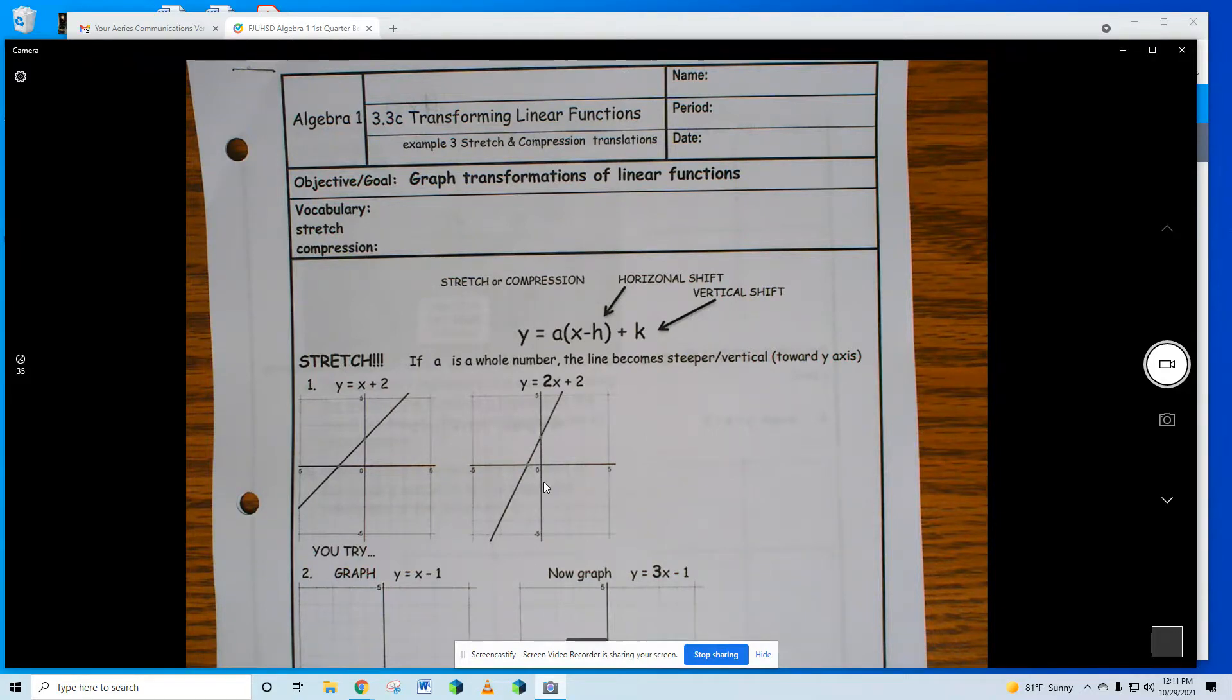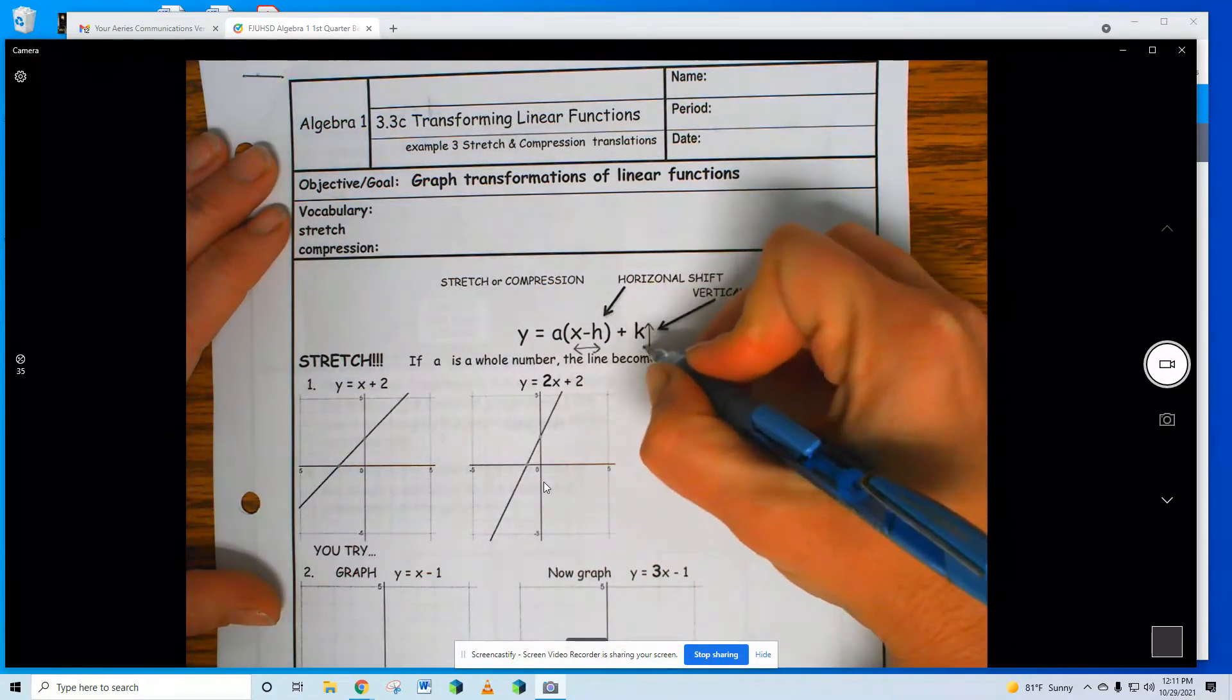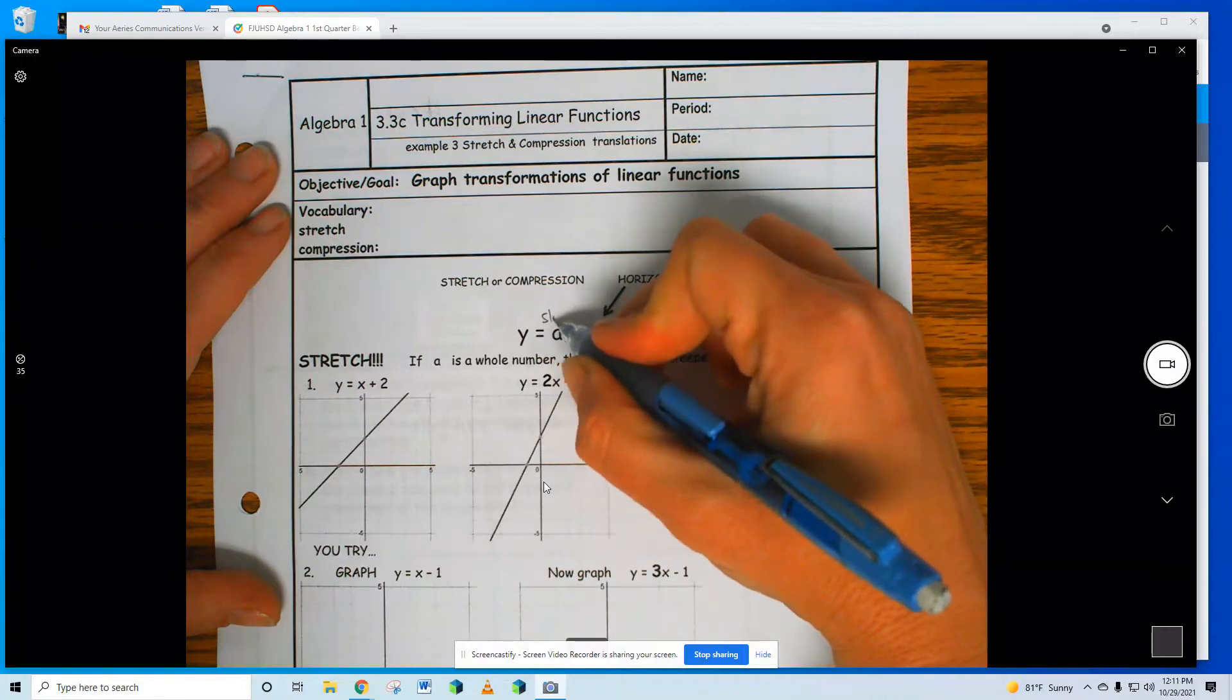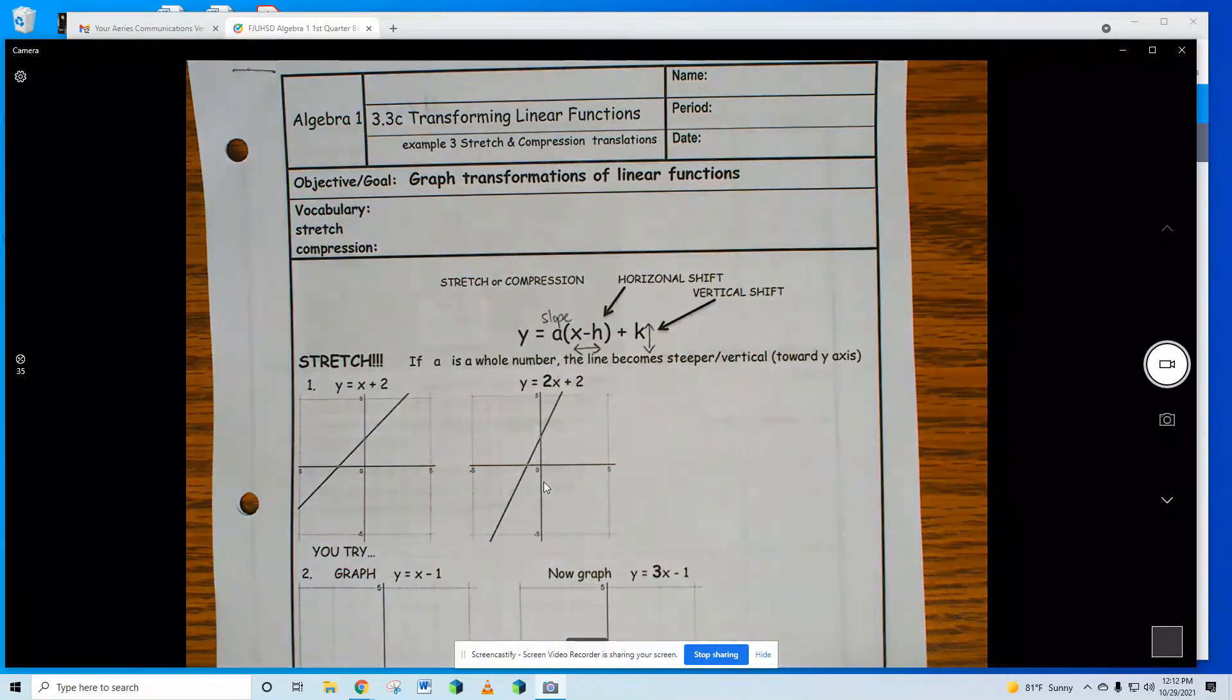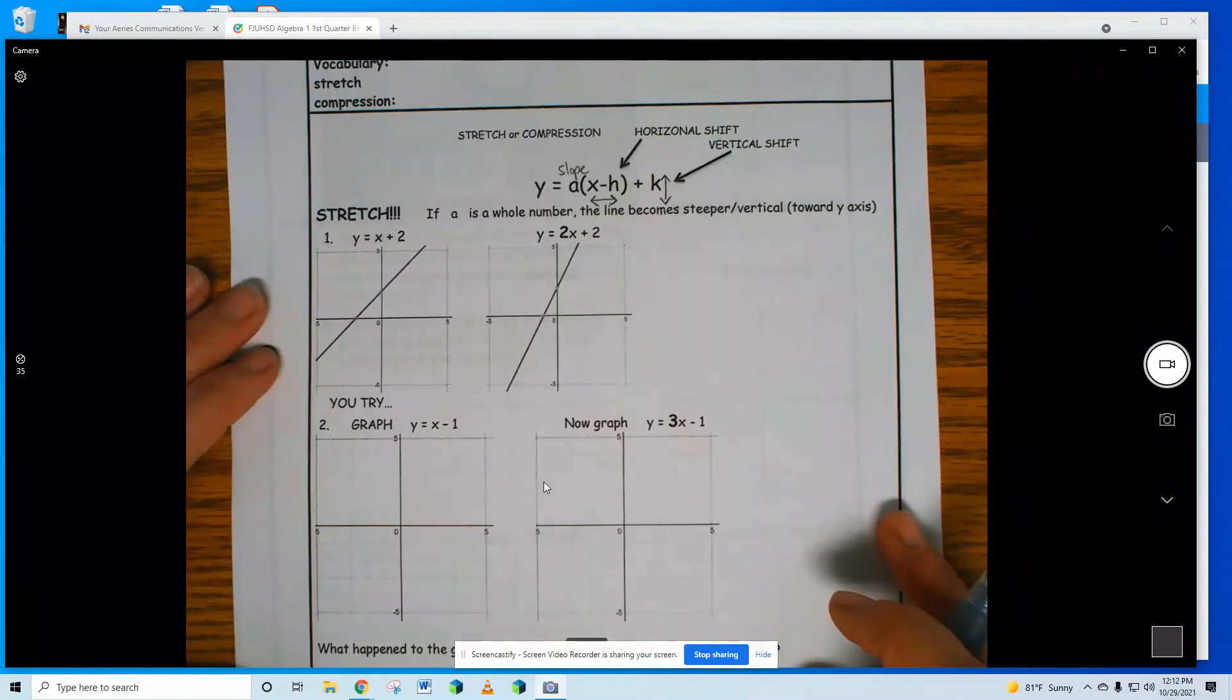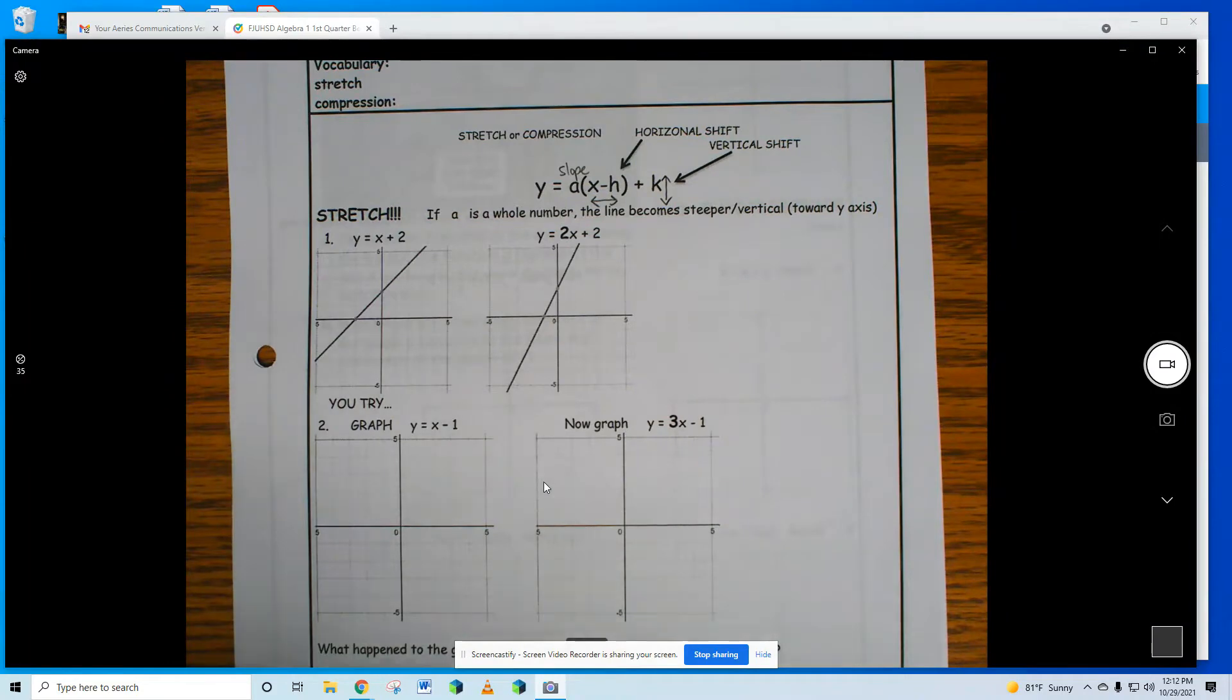Today we're learning about what if there's a number in front. We call this number the slope. It's an a. So the slope, let me draw my little lines: h left or right, k up or down, a is my slope.